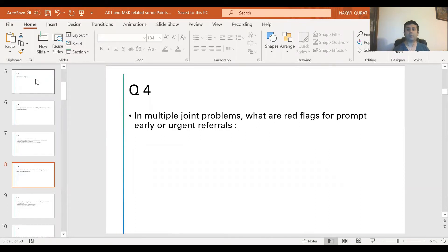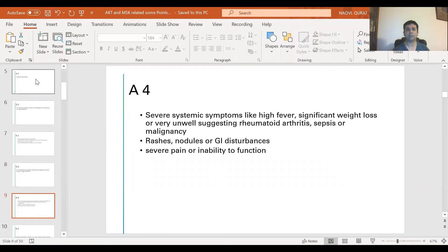Question 4: In multiple joint problems, what are red flags for prompt, early, or urgent referrals? Answer is severe systemic symptoms like high fever, significant weight loss or very unwell patients, suggesting septic arthritis or malignancy, rashes, neurological or GI disturbances, severe pain or inability to function.